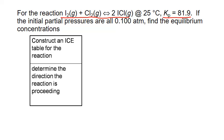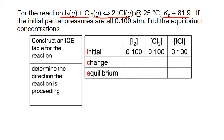Our first step is to construct an ICE table and fill in our initial concentrations. Then we need to figure out the change in concentration — specifically, the direction the reaction will proceed, meaning whether to add to the reactants or the products. We'll do a reaction quotient calculation to figure this out.